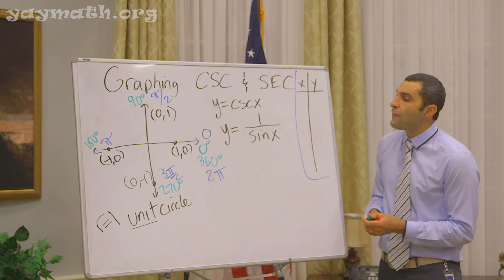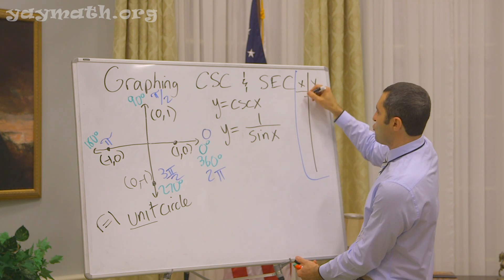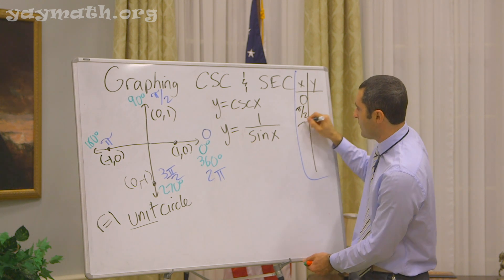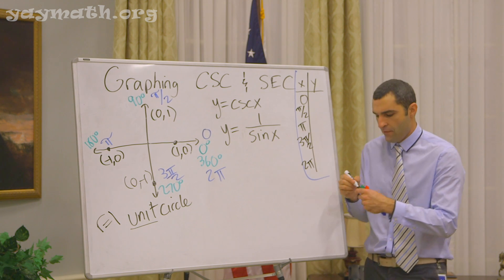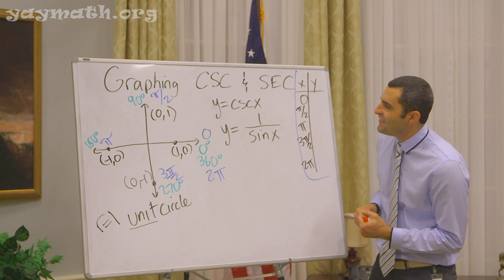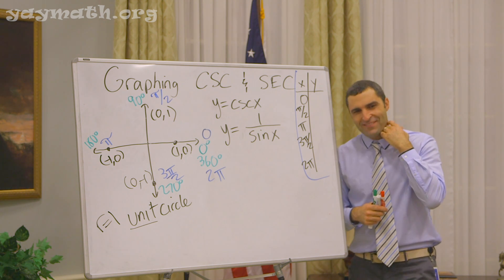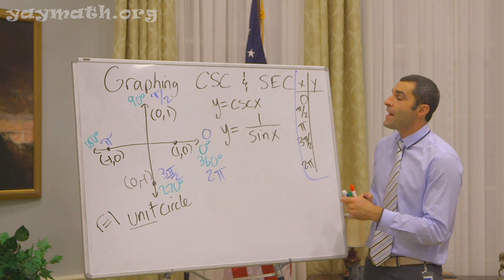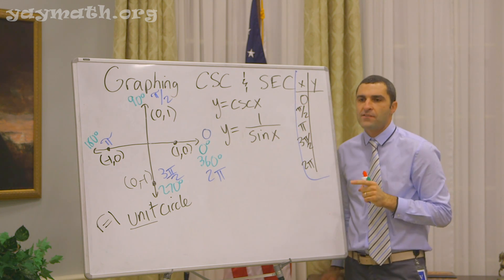What are the five x points of interest, please? Zero, pi over two, pi, three pi over two, two pi. Now, what is the sine when x is zero? What is the sine of zero?